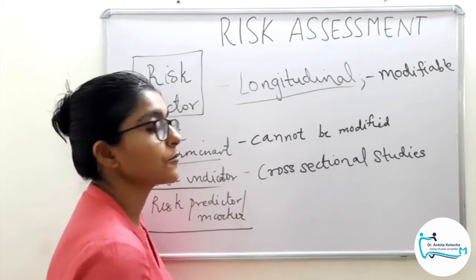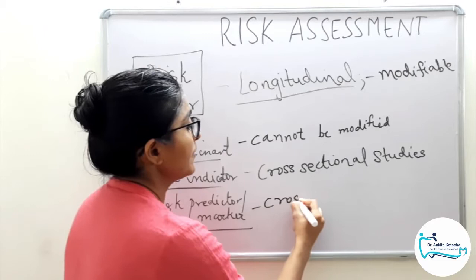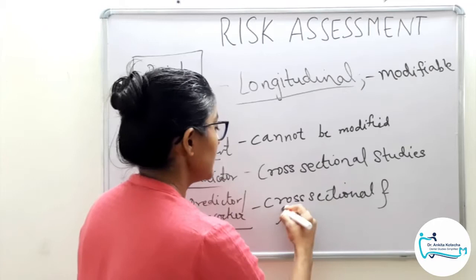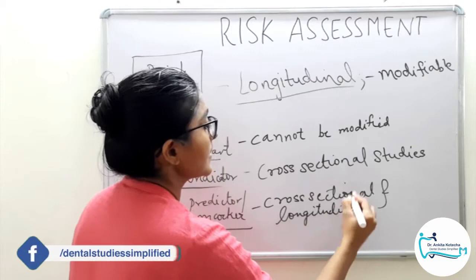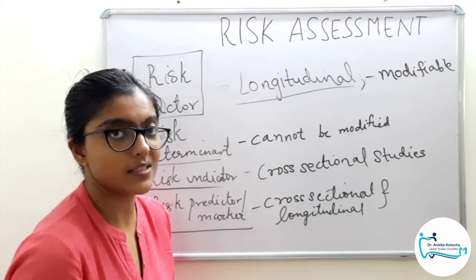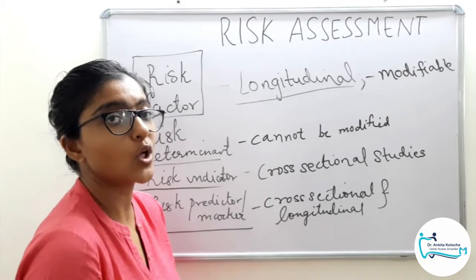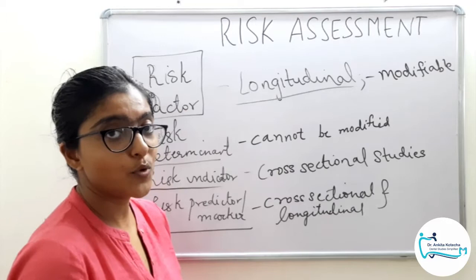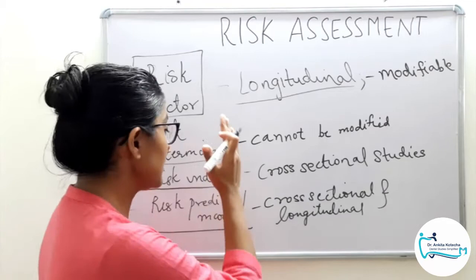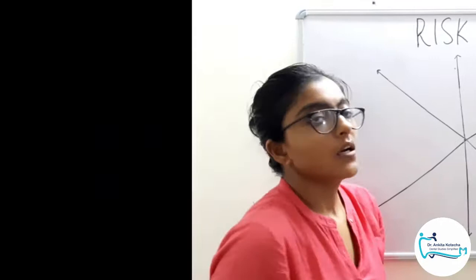The last terminology is Risk Predictor or Marker. They are very similar to risk factors and are confirmed or verified through both cross-sectional studies and longitudinal studies. They are associated with increased likelihood of developing the disease but do not cause it. Examples for risk predictor or marker: the name itself helps — a predictor or marker predicts the progression, course, or outcome of the disease. Examples include bleeding on probing and previous history of periodontal breakdown.